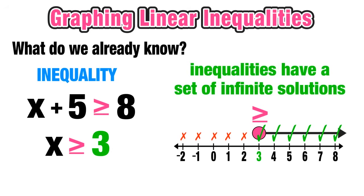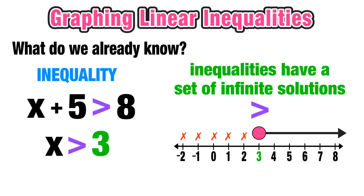Since there are an infinite number of values larger than 3, the solution to an inequality is a set of infinitely many solutions. If the symbol were just greater than (not greater than or equal to), then 3 would no longer be included — we'd use an open circle, and the solution set would be any value larger than 3, not including 3.